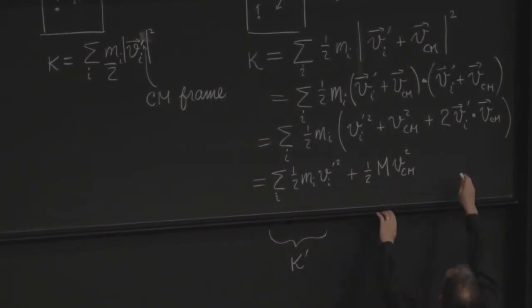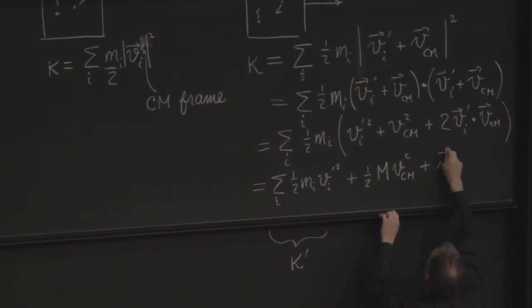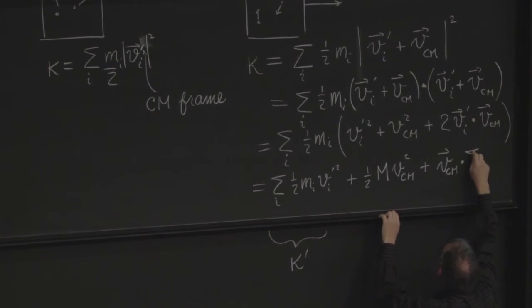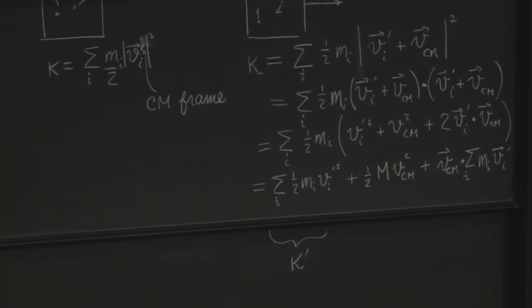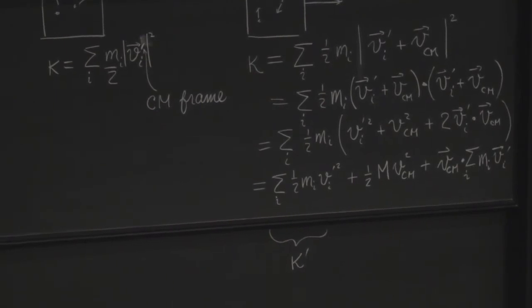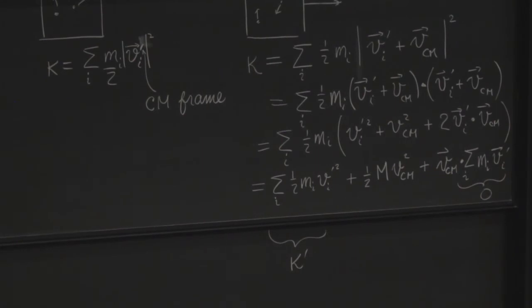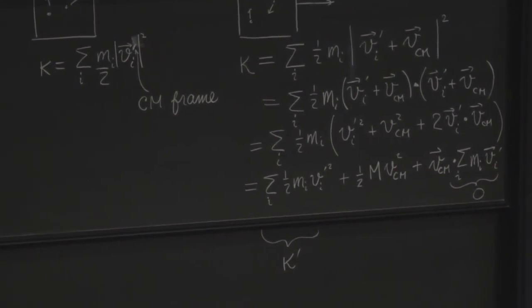On the last term, I want to pull out of the sum the 2 and the vcm. So I get plus vcm dotted into the sum on i of m sub i v sub i prime. Well, the 2 canceled the half. But it's going to work out that 2 times 1 half times 0 is the same thing as 2 times 0, because this sum in the center of mass frame is 0. That's what makes it the center of mass frame. It has no momentum, no net momentum.